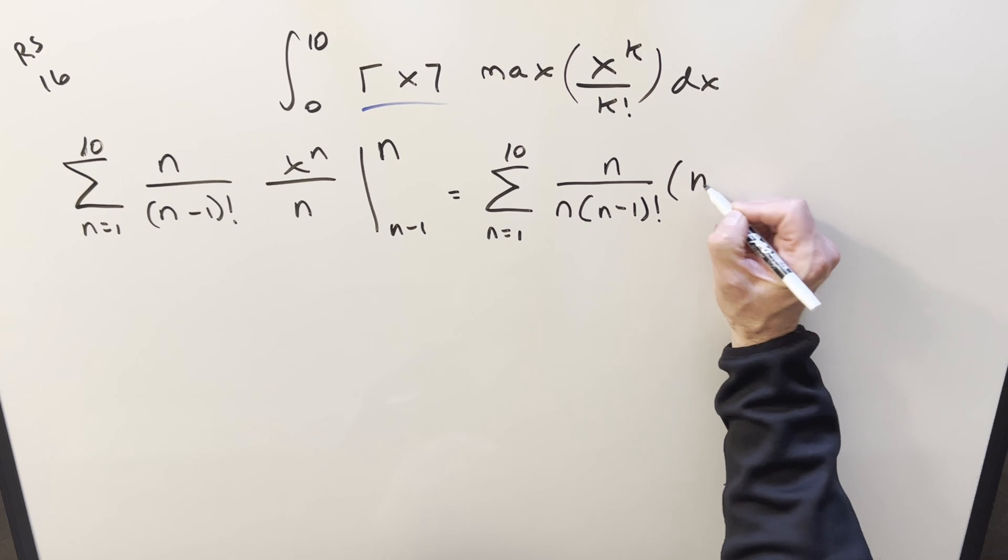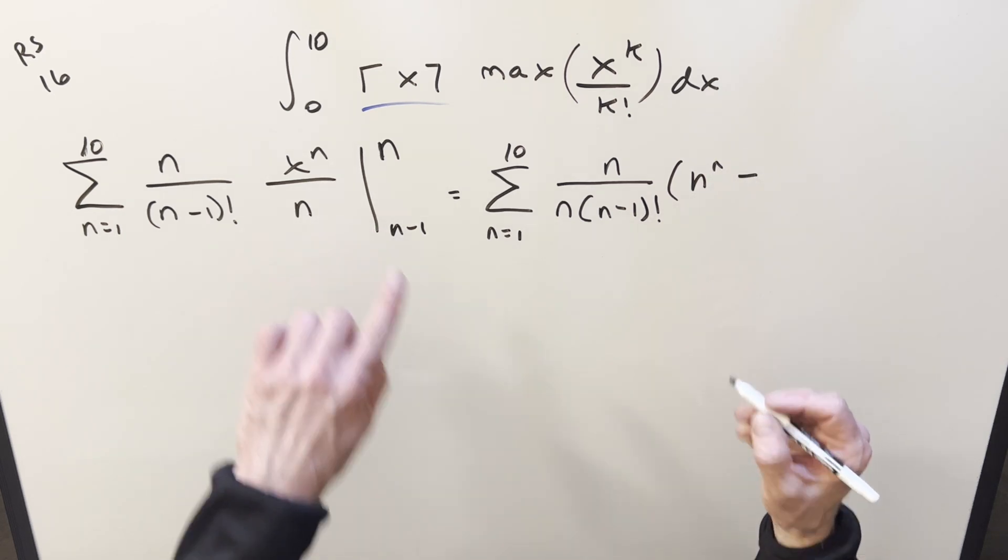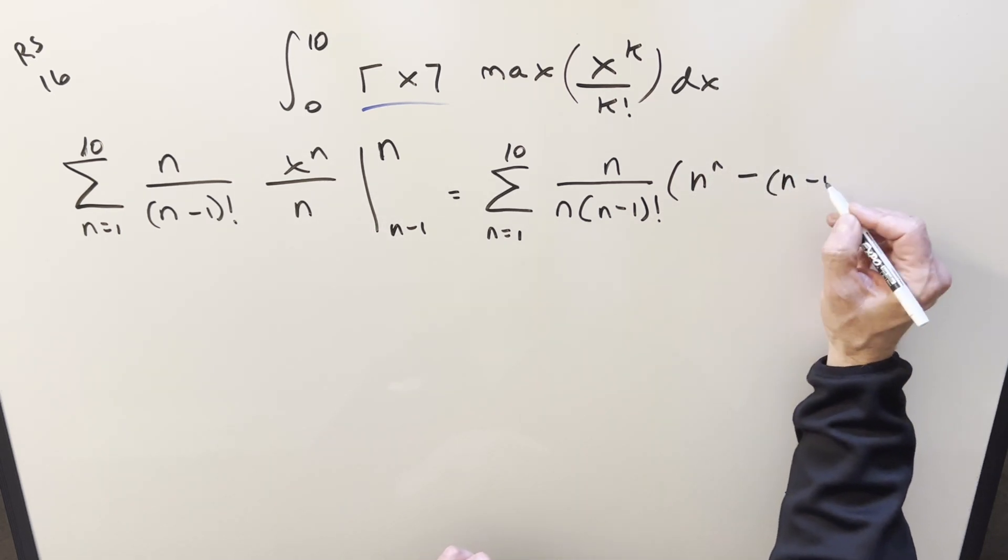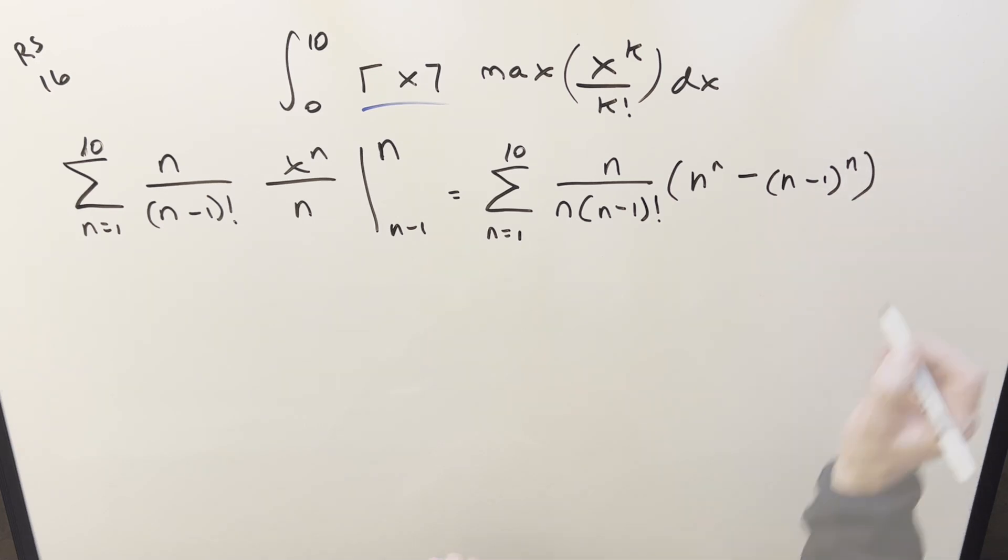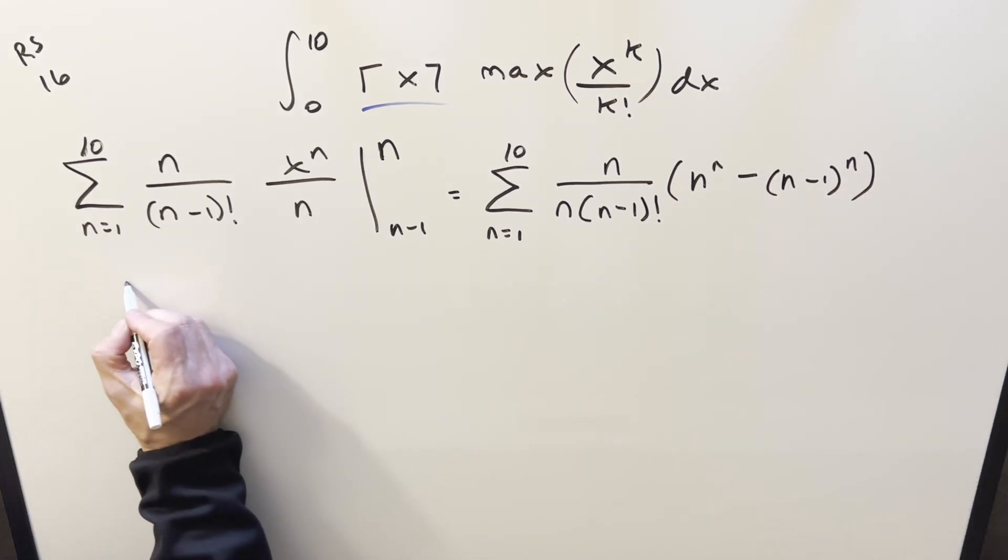Plugging in the n, we're going to have, this is going to become n to the n. Plug in n minus 1, and we get n minus 1 to the n. And then with the minus sign here, let's break this up into two sums.